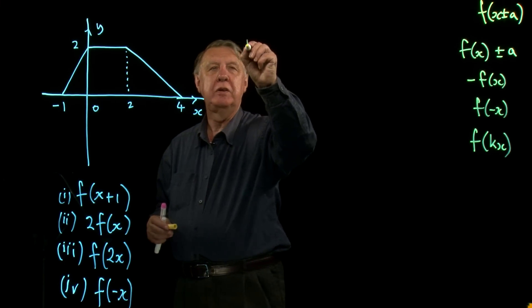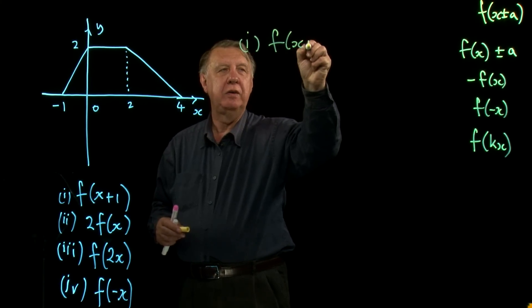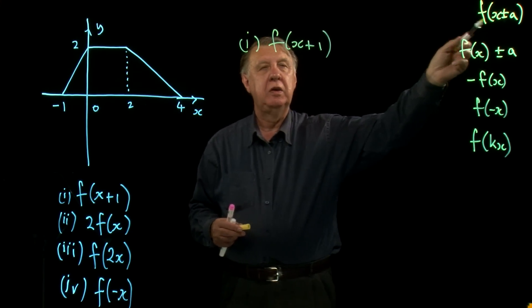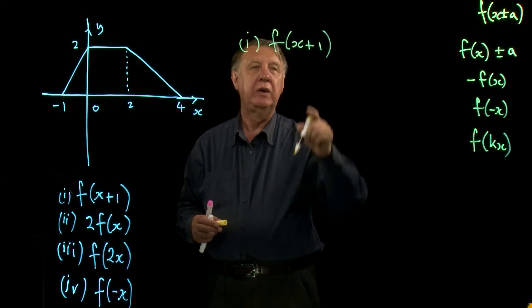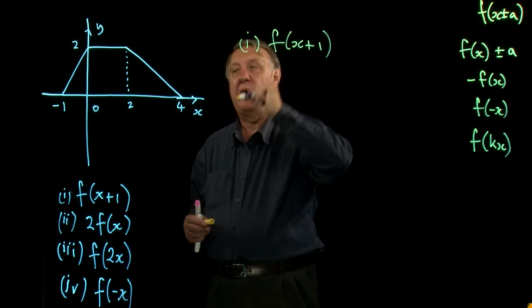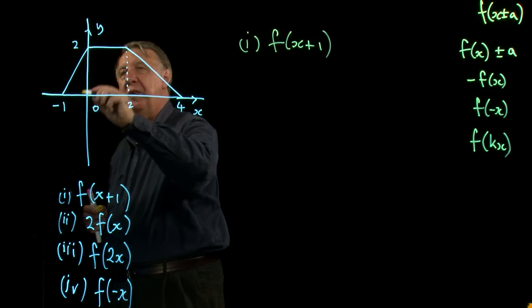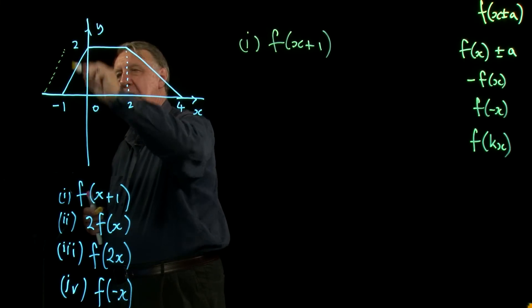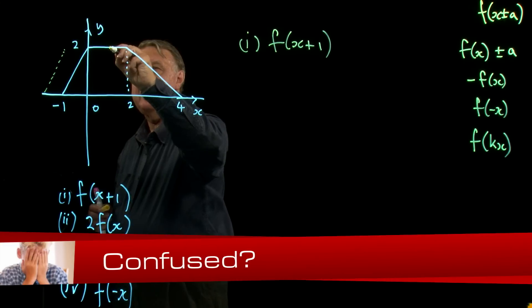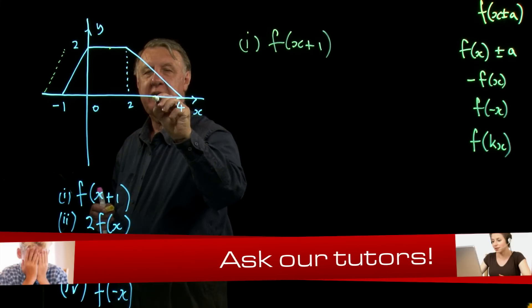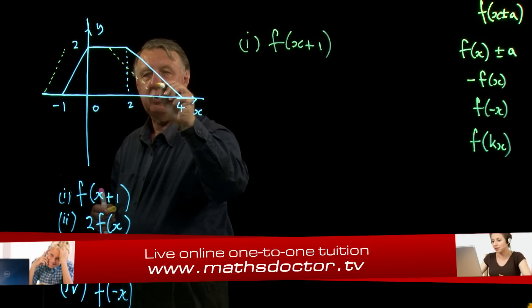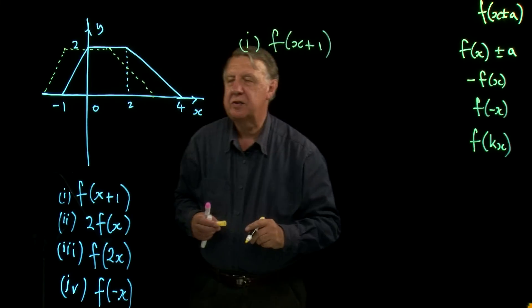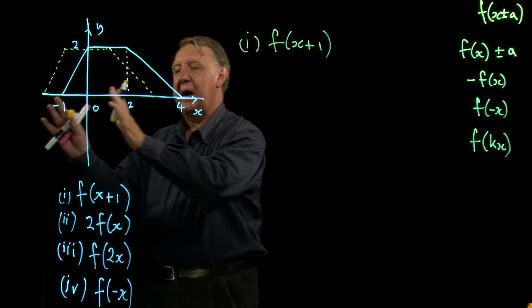So the first one then, nice and easy: function x plus one. That's a translation. It's one of these. Remember it doesn't go the way you want it to go - it goes back one. So therefore the whole thing, this will go back to there. Let's do it just sort of dotted for a minute. Two will go back to there, four will go back to three. So this line comes across there and that stays like that. So the whole function then moves back one.